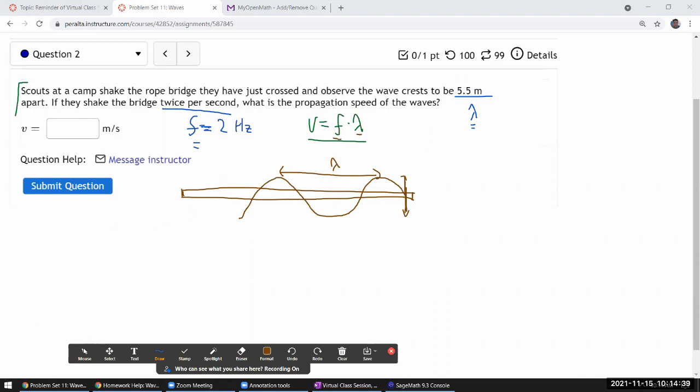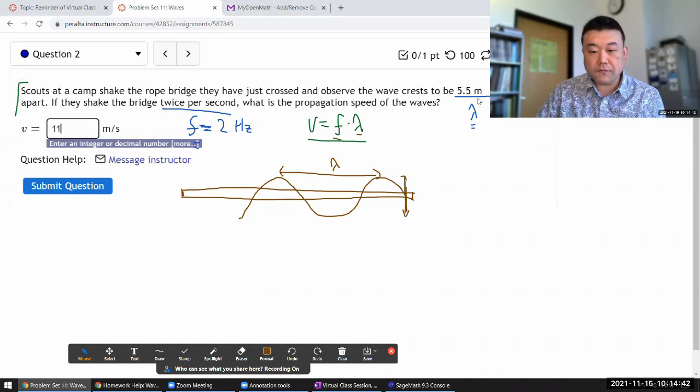That wave propagation speed should be product of these two numbers. I think I can do that in my head, so it should be 11 meters per second. 5.5 meter times 2 per second, so 11.